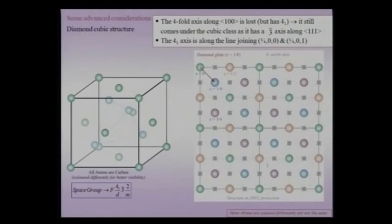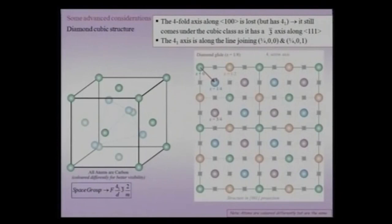Symmetry operators act not only on atomic entities but also on other symmetry operators. The diamond glide connects an atom at z=0 to an atom at z=¼. The glide reflection plane is at z=⅛, so it moves an atom at z=0 to z=¼. In the international tables the point group is written as 4/M 3-bar 2/M, reflecting the 4₁ screw axis even though there is no true fourfold axis.